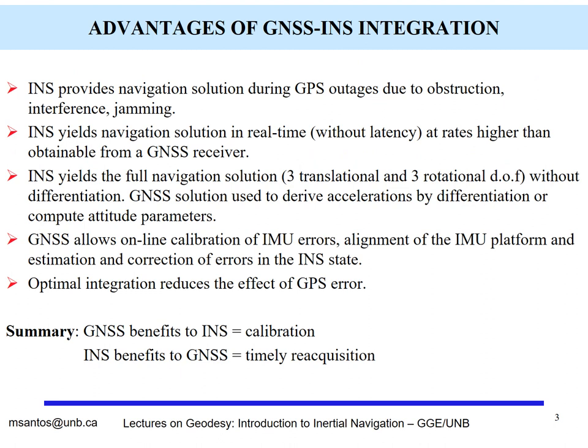The advantages of integration between GNSS and inertial are various. First, the inertial navigation system provides a navigation solution whenever GNSS cannot — for example, due to obstructions, interference, or jamming. Also, an INS provides solutions in real-time at rates much higher than a GNSS receiver can provide. The INS provides the full navigation solution — three translational and three rotational degrees of freedom — without differentiation. GNSS is used to derive accelerations by differentiation or compute attitude parameters, and it allows online calibration of IMU errors, including drift, as well as alignment of the IMU platform and correction of errors in the INS state.